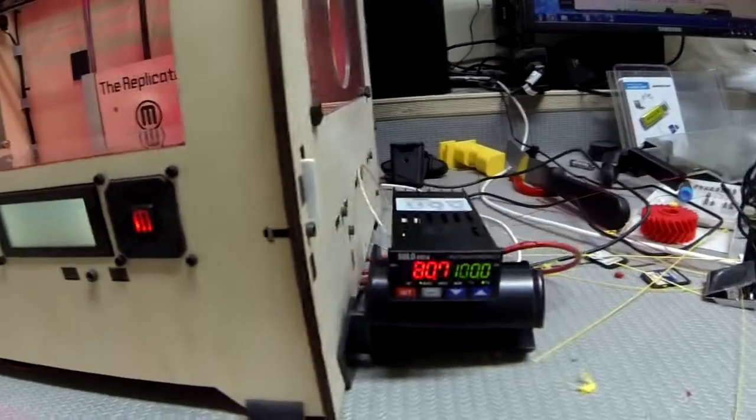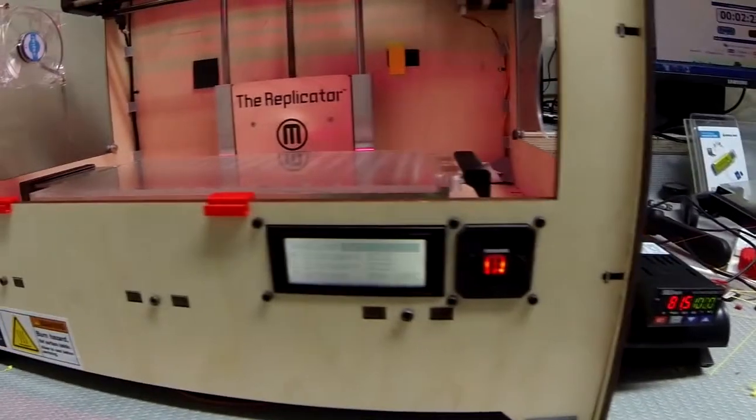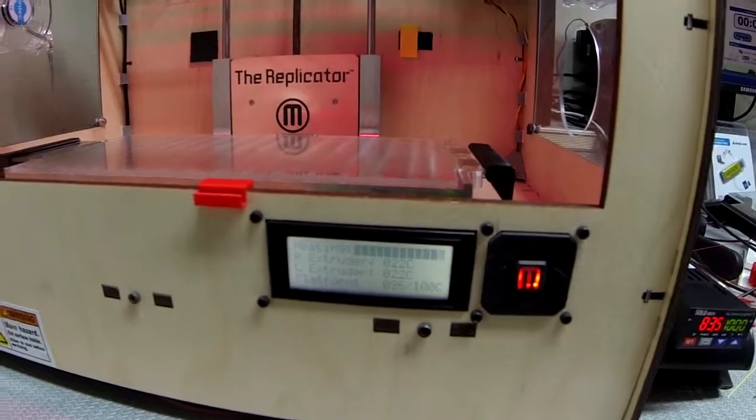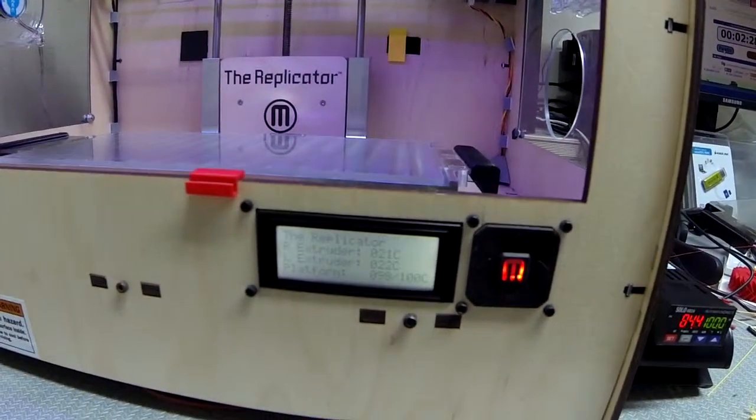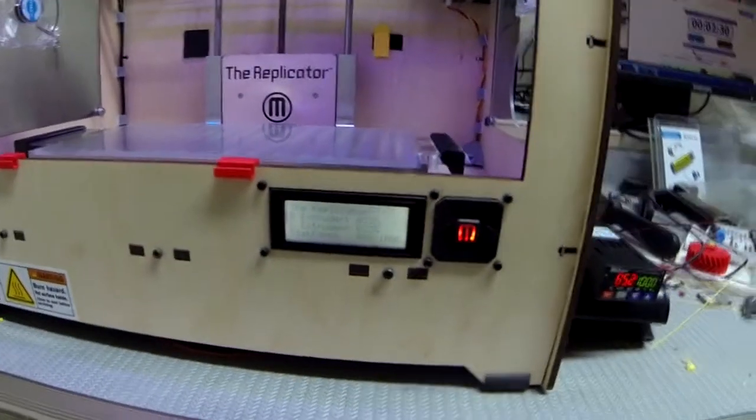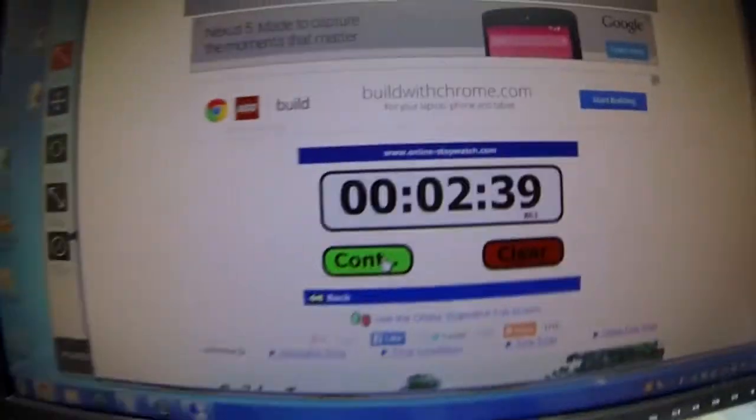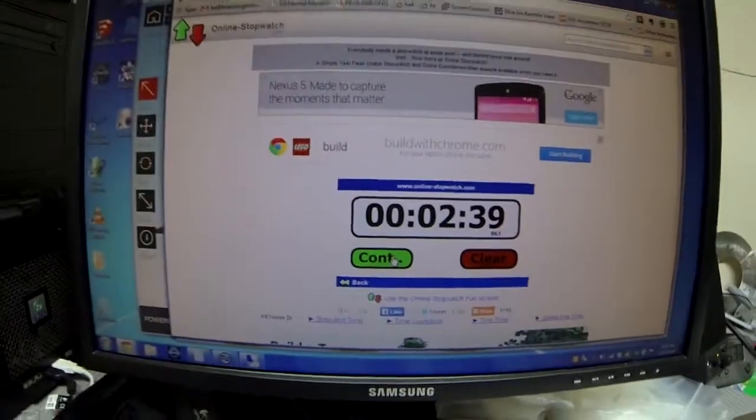And I've noticed that it seems to be, the MakerBot overshoots. Once everything stabilizes, then the MakerBot comes a little more into parity with what the other temperature controller. So there it is, 100 degrees according to the MakerBot. So that's about 2 minutes and 40 seconds or so,